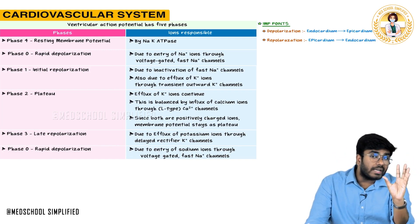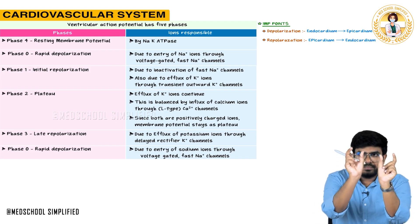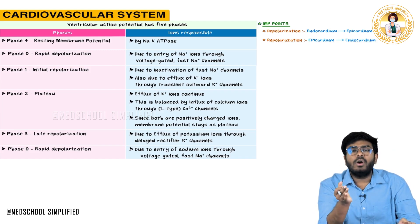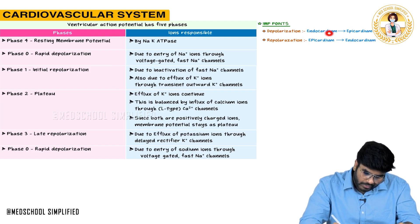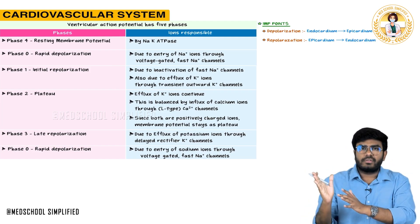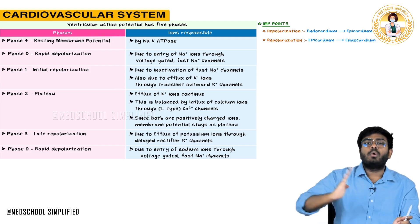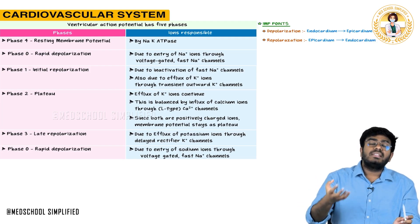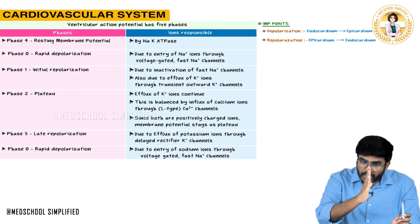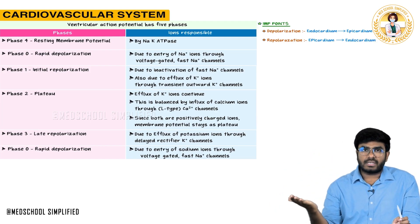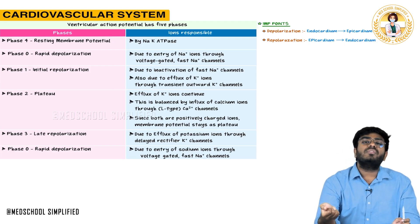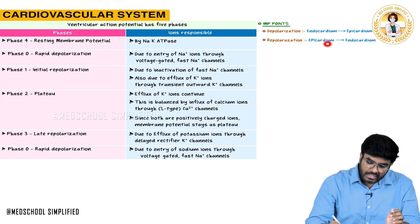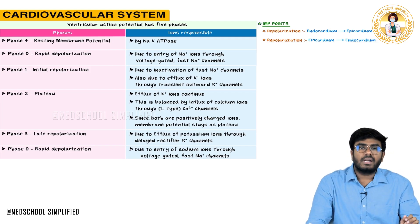An important point: in the ventricular myocardium, depolarization happens from the endocardium to the epicardium — from in to out. The heart has three layers: endocardium, myocardium, and pericardium. Depolarization activates the ventricular myocytes starting from the endocardium outward. However, the epicardial cells are the last to depolarize but the first to repolarize. So repolarization goes from epicardium towards the endocardium.